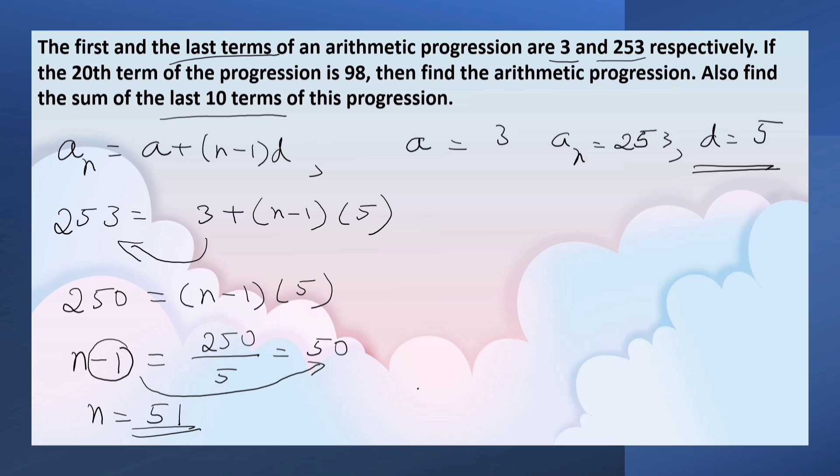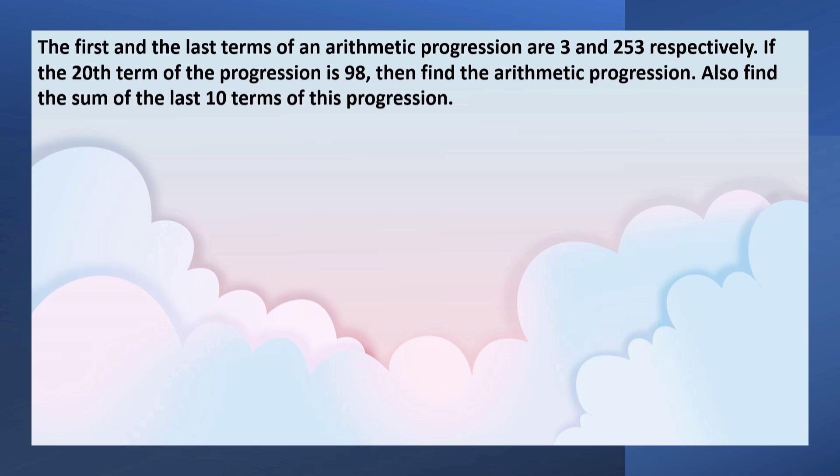In order to find the sum of the last 10 terms, let's write the progression in the reverse order. Here A equals 253. Common difference D is negative 5. When we come in reverse order, D becomes negative. N is the last 10 terms, so here N is 10.